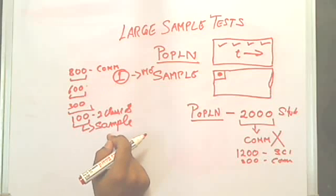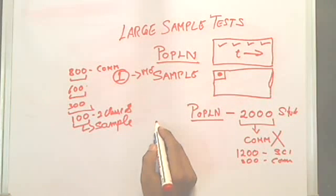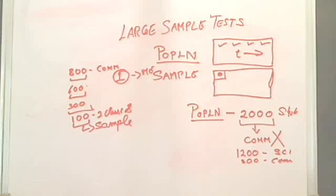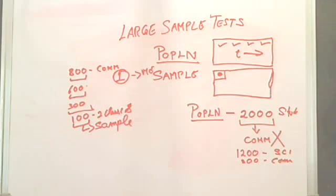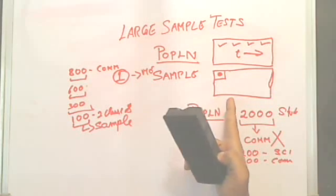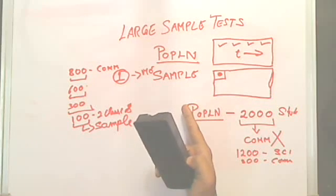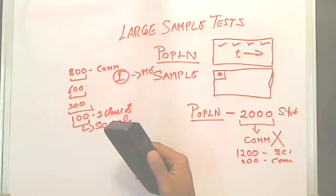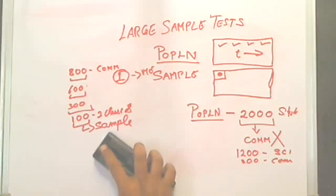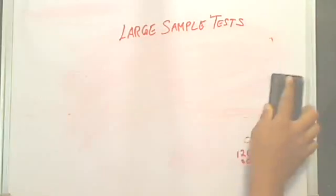A sample is always easier to study than a population. For example, if you want to research how many people in India prefer to wear cotton clothes, the population is 1.2 billion — walking around with a questionnaire would mean the research never ends. Instead, you take a sample, decide how people will fall into it, and that's when the concept of hypothesis begins.